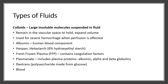The other type of fluid we use are colloids. These are composed of large, insoluble molecules that remain suspended in fluid. They are made to remain in the vascular space and hold volume — think of a sponge that holds water in. These are used for severe hemorrhage when perfusion is affected. Examples include albumin, Hespan, hetastarch, fresh frozen plasma, plasminates, dextrans, and blood, which is probably the main colloid to consider in hemorrhage.